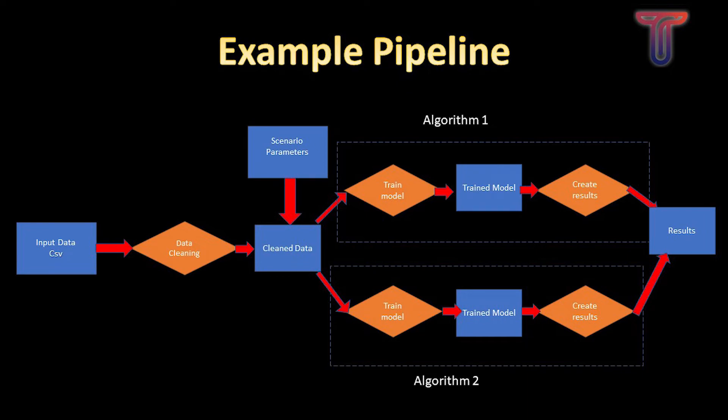Here's a high-level overview of the pipeline being used in this application. Input data comes in through a CSV file on the far left, and results are displayed in the GUI on the far right. In between, we have some processing steps as well as two regression algorithms which will be executed in parallel.